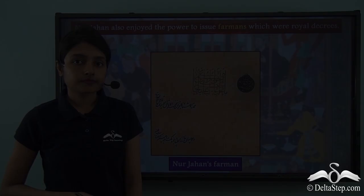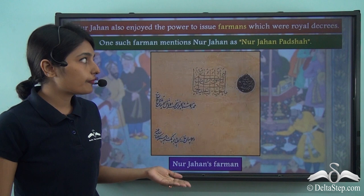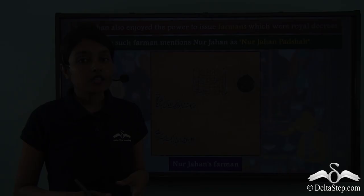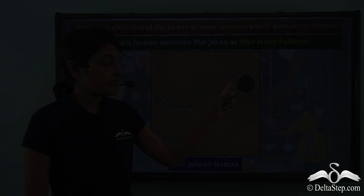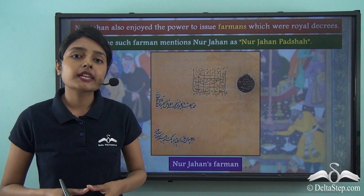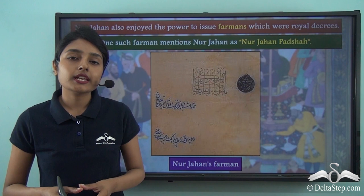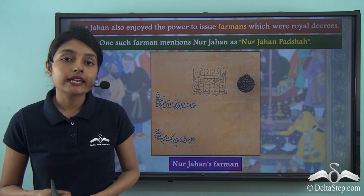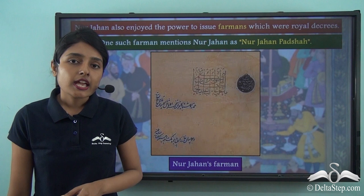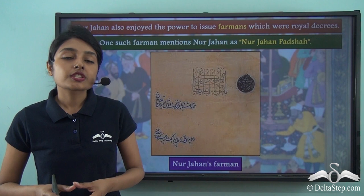One of Nur Jahan's firmans features a square seal and a round seal. The square seal reads: 'Command of her most elevated and sublime majesty Nur Jahan Padisha Begum,' and the round seal states: 'By the sun of Jahangir she became as brilliant as the moon; may she become the lady of the age.' Such was the power Nur Jahan enjoyed that she was able to place her brother Asaf Khan in the position of Prime Minister in the Mughal Empire.